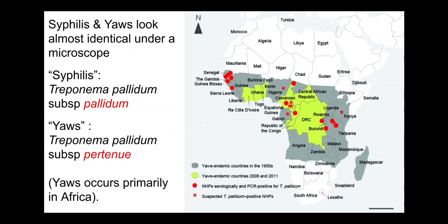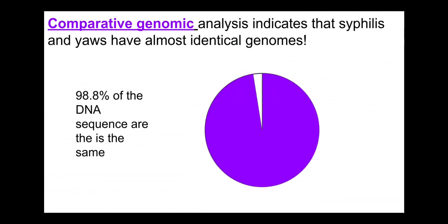Syphilis and yaws look almost identical under the microscope. They're not just in the same genus — they're considered the same species, just different subspecies. Syphilis, the STD, is called Treponema pallidum subspecies pallidum, while yaws is Treponema pallidum pertenue. Yaws is primarily a tropical disease, especially in Africa, whereas syphilis occurs around the globe.